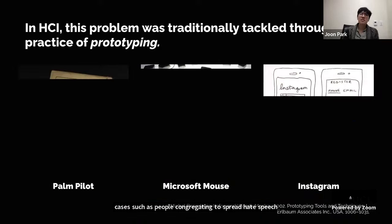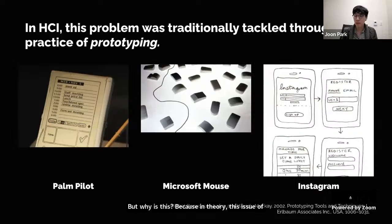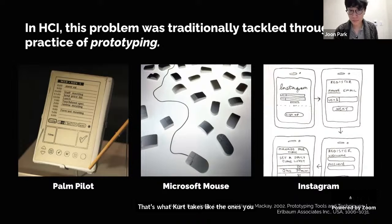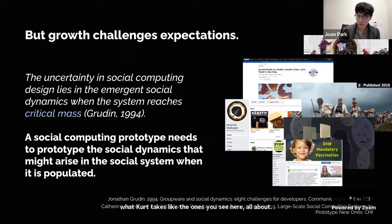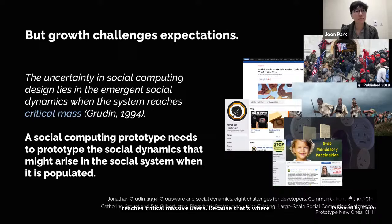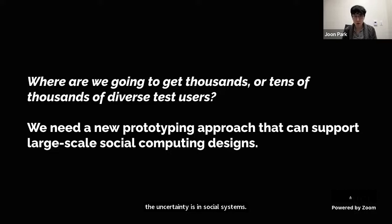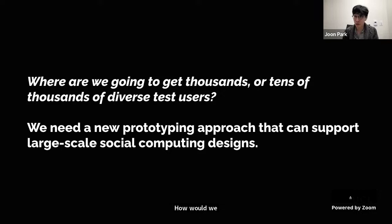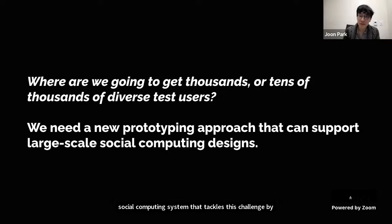In theory, understanding how people might use an interactive system is something we know how to tackle — that's what prototypes are about. But a successful social computing prototype needs to prototype not just user flow, but the social dynamics that arise when the system reaches a critical mass of users. That's where the uncertainty is, and that's an impossible task for existing prototyping approaches — where are we going to get thousands of diverse test users? Generative Agents enable a new way of prototyping social computing systems by generating a large number of synthetic social interactions that might arise in a populated social system.